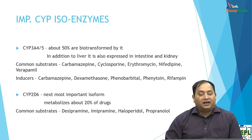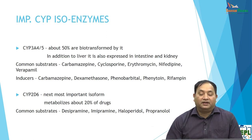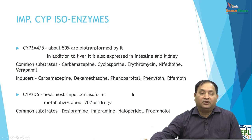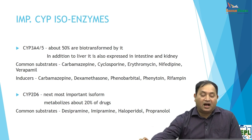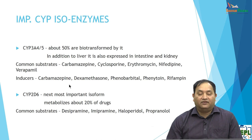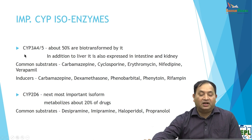An important aspect of cytochrome P450 isoenzymes is that CYP3A4 and CYP3A5 biotransform approximately 50% of all drugs. This enzyme is expressed not only in the liver but also in the intestine and kidney. Common drugs metabolized by CYP3A4 include carbamazepine, cyclosporine, erythromycin, nifedipine, and verapamil. Inducers of CYP3A4 include carbamazepine, dexamethasone, phenobarbitone, phenytoin, and rifampicin — these are antiepileptic drugs and antibiotics.